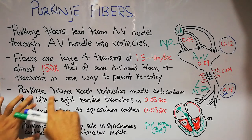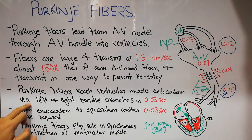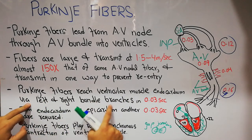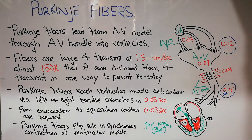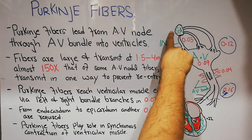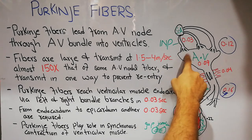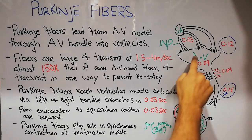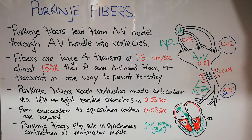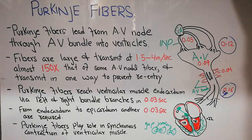The Purkinje fibers reach the ventricular muscle endocardium via the left and right bundle branches in 0.03 seconds. Previously, we discussed that the impulse generated in the SA node takes 0.03 seconds to reach the AV node. The impulse then gets delayed in the AV node because the fibers there have few gap junctions. In the AV node, the impulse is delayed about 0.09 seconds.